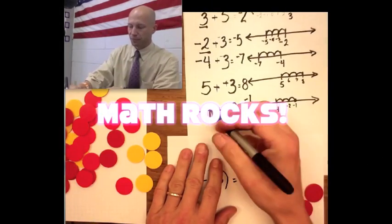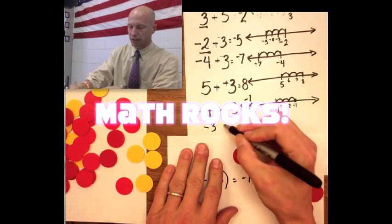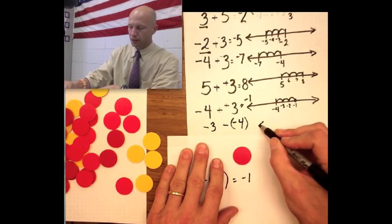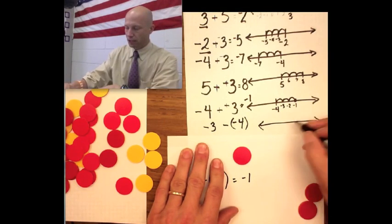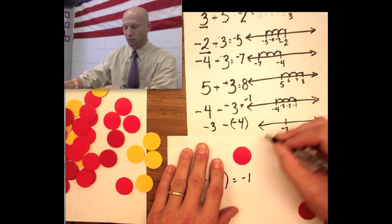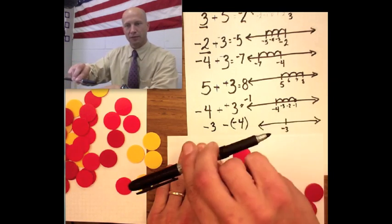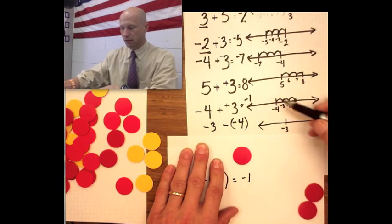Here's another example: negative 3 minus negative 4. Here's negative 3 on my number line. When I go negative 4, I know to subtract I go this way, but I'm subtracting a negative so I'm going to go this way: 1, 2, 3, 4. It's negative 2, negative 1, 0, positive 1.